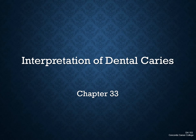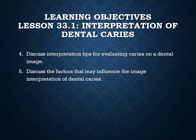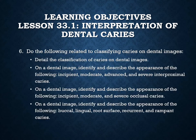Chapter 33 is the interpretation of dental caries, found on page 403. The learning objectives are to define key terms associated with the interpretation of dental caries, describe dental caries, and cover the following related to detection: explain why caries appear radiolucent on a dental image, discuss the importance of dental caries in relation to the clinical examination and the dental image examination.